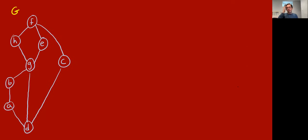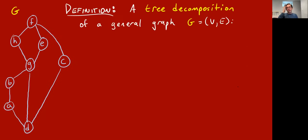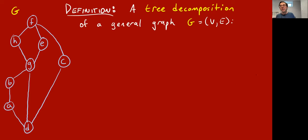In the 70s people were thinking about these ideas, and then in the 80s people tried to generalize them further and came up with the following definition. This is going to be the main definition slide — it's a complicated definition, no doubt about it. Get ready: it's ultimately the definition of the tree width of a general graph.